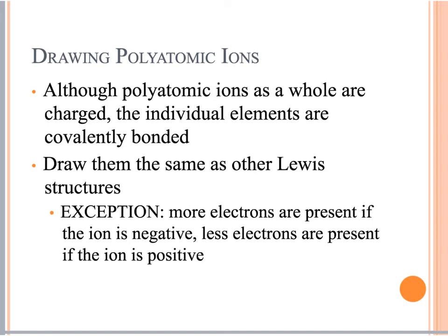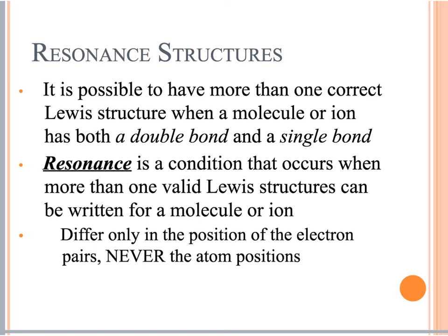Sometimes you'll need to draw a polyatomic ion. An ion has a charge, and you make an ion by adding or subtracting electrons. You draw them the same as Lewis structures, except you account for the charge. If it is negative, you add electrons to the total valence; if it's positive, you subtract electrons from the total valence — not from the probable, only from the valence.